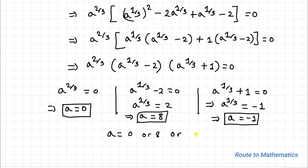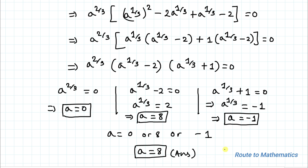We are asked to find which solution of 'a' satisfies the original equation. By substituting each value, only a = 8 satisfies the given equation. Hence the solution is a = 8. I hope you have understood the solution. Thanks for watching — please subscribe to my channel and click the bell icon for more interesting videos.